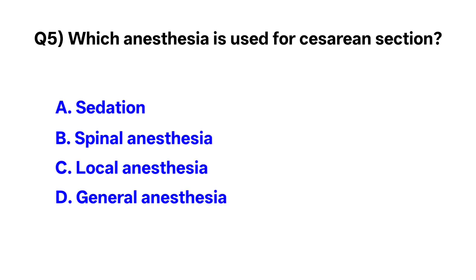Question No. 5. Which anesthesia is used for caesarean section? Correct option is B. Spinal anesthesia.